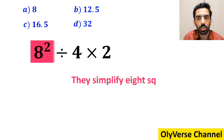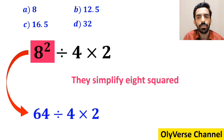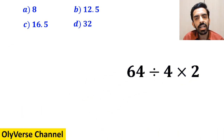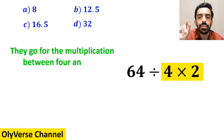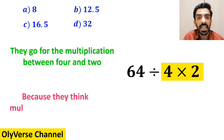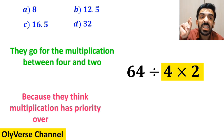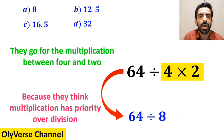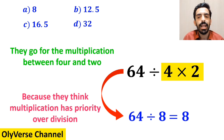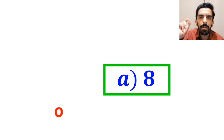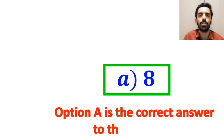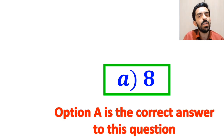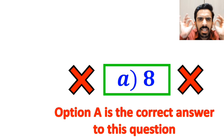They simplify 8 squared and write this expression as 64 ÷ 4 × 2. In the final step, they go for the multiplication between 4 and 2, because they believe multiplication has priority over division. So instead of this expression, they write 64 ÷ 8, which finally gives them the answer 8. And immediately, they conclude that option A is the correct answer. However, this answer is absolutely wrong.